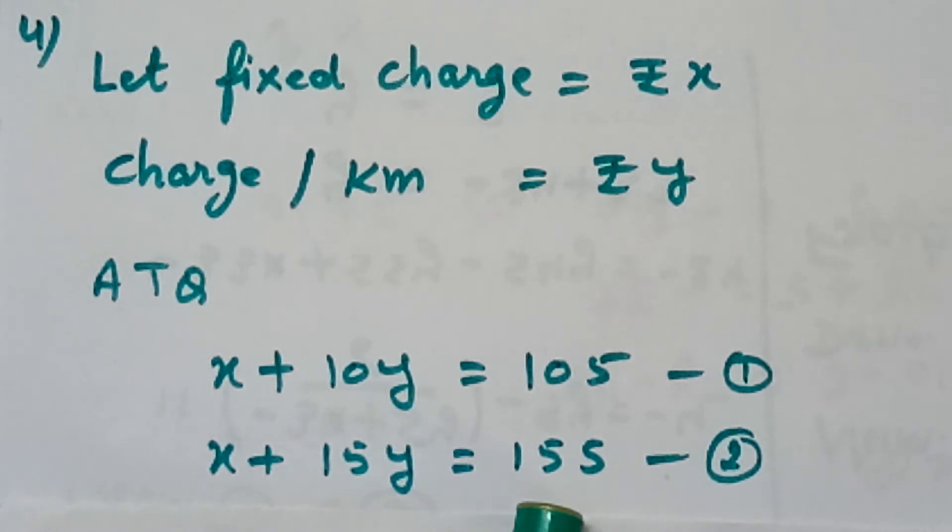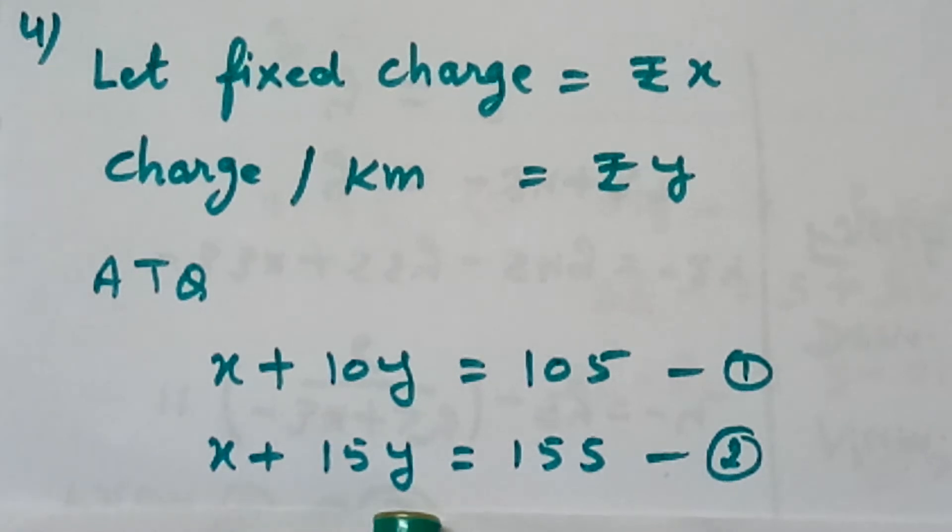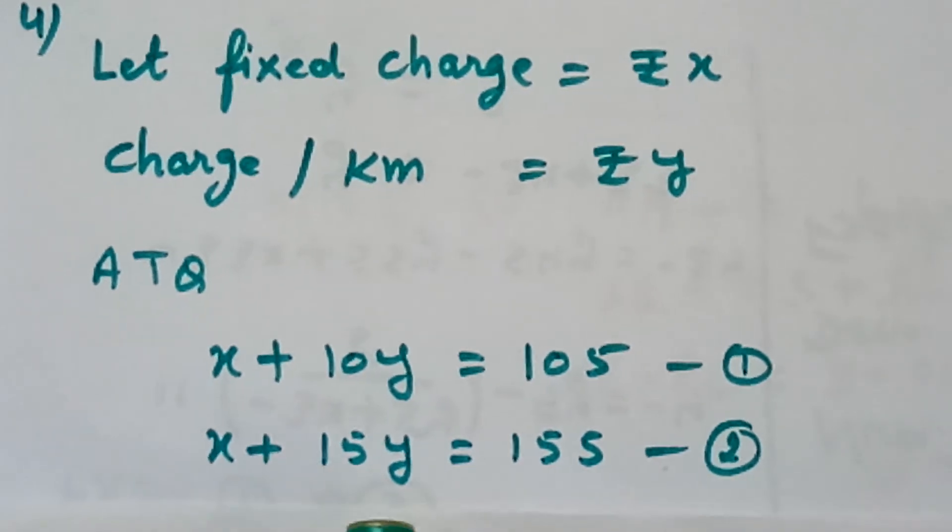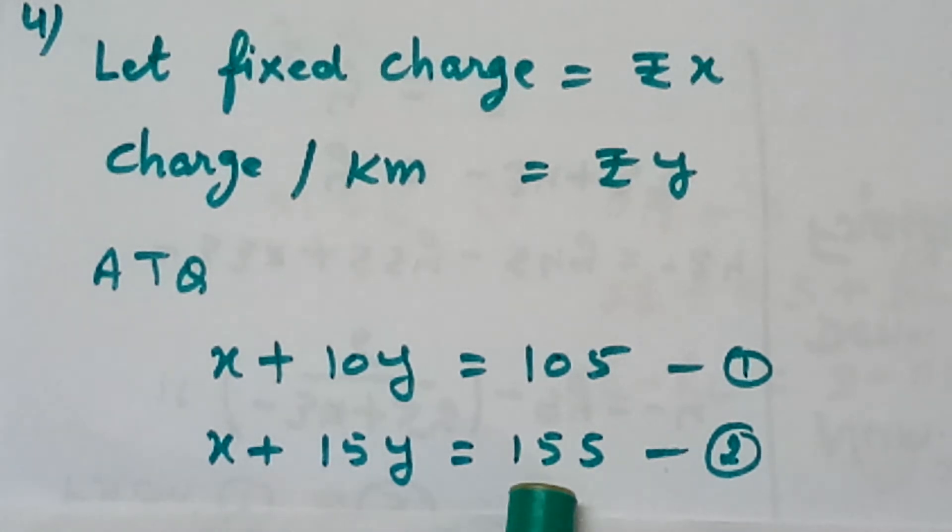Second condition is that for 15 km, he has to pay Rs. 155. x is the fixed charge, 15 km is the distance, y is the charge per km. This is x plus 15y equals to 155.